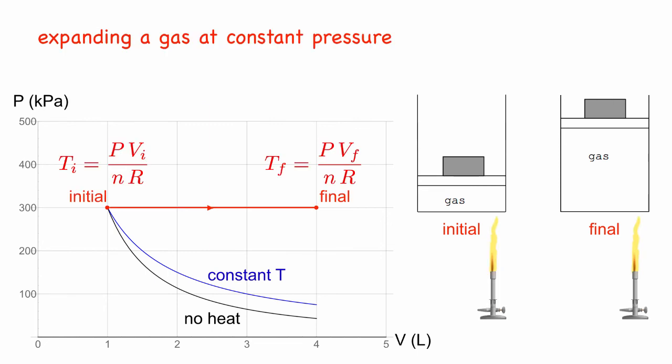We can also expand the gas while keeping the pressure constant by simply having a weight on top of the piston. Then we have to add even more heat in order to get the same expansion in volume. The ideal gas law confirms that in this case, the final temperature is 4 times larger than the initial temperature since the volume expanded by a factor of 4 while the pressure was constant.